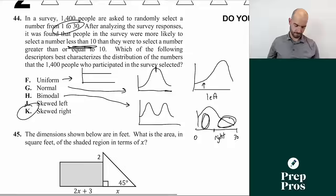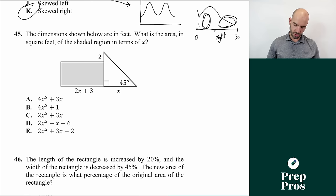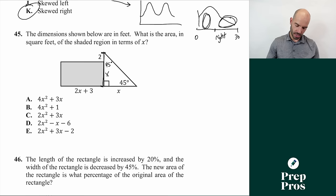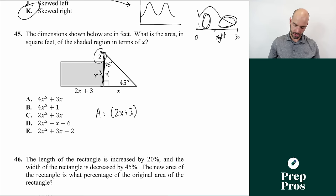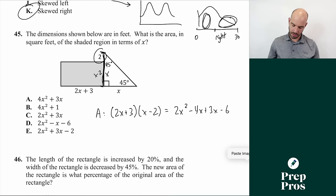Number forty-five: find the area in terms of x. This is a 45-45-90 isosceles right triangle, so the full vertical length equals x. The relevant side is x minus 2. Area equals length times width, so area equals (2x + 3)(x - 2). Foiling: 2x² minus 4x plus 3x minus 6 equals 2x² minus x minus 6. The answer is D.